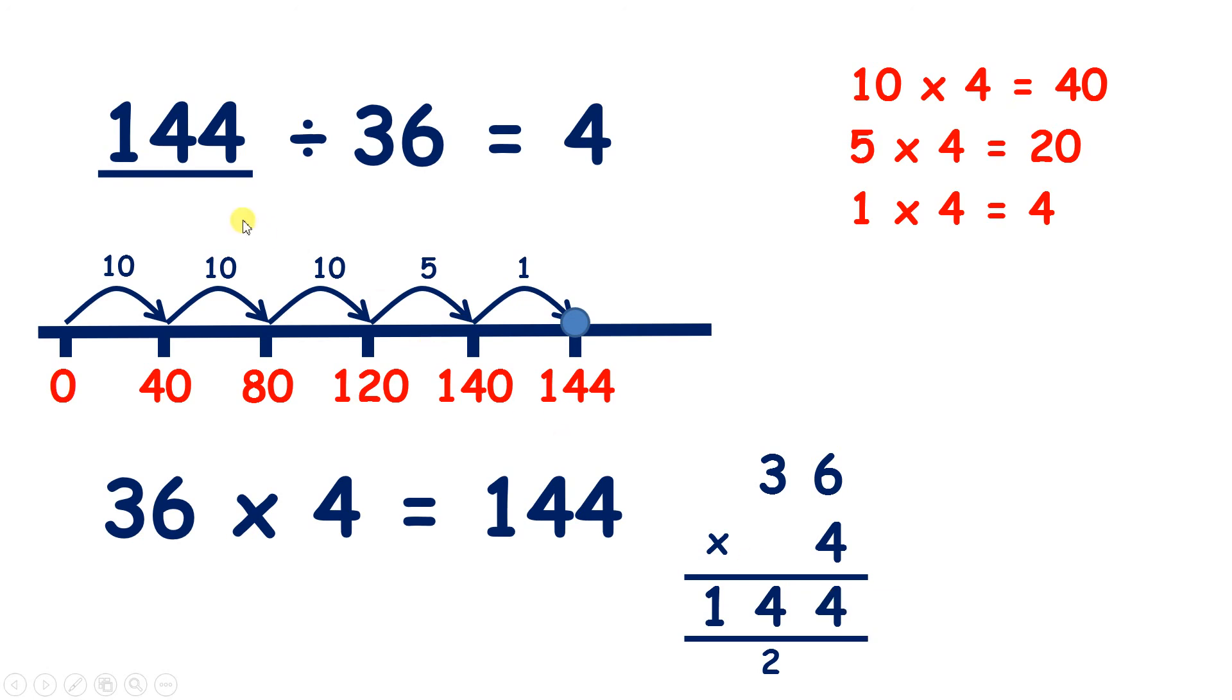So with division, when you have a missing dividend, you can multiply your divisor and your quotient to find your missing number.